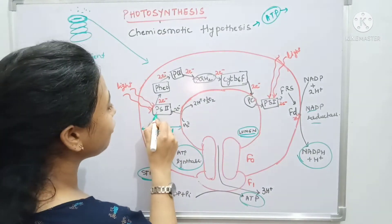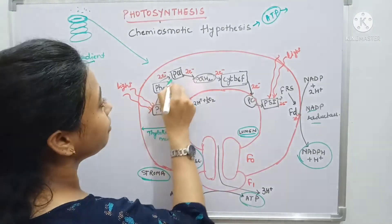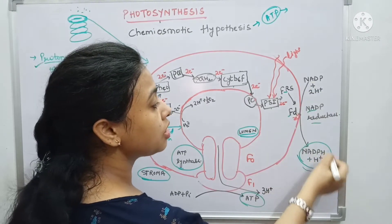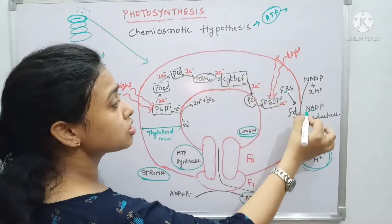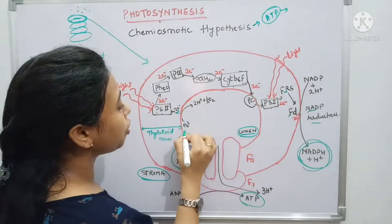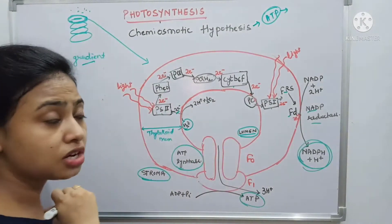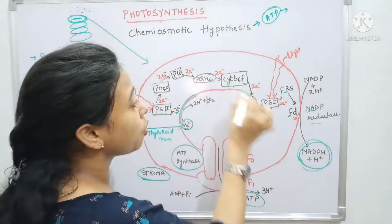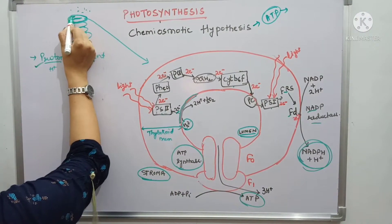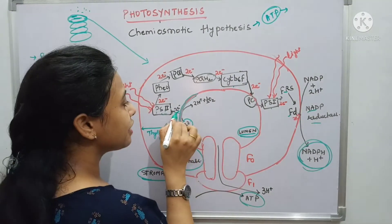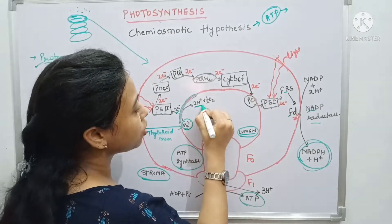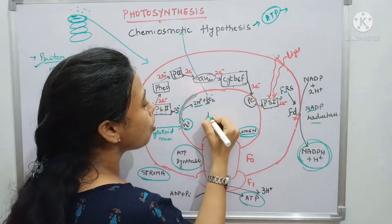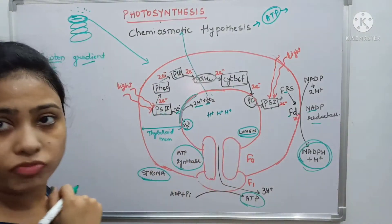In the non-cyclic process, electrons travel from Photosystem II to pheophytin, plastoquinone, cytochrome b6f, plastocyanin, Photosystem I, then to ferredoxin, and ultimately form NADPH. For Photosystem II, electrons are replenished by splitting water. This water-splitting complex is attached on the inner side of the thylakoid membrane, so it releases electrons to Photosystem II but also releases hydrogen ions and oxygen. The oxygen is released outside, but the hydrogen ions remain inside the lumen.